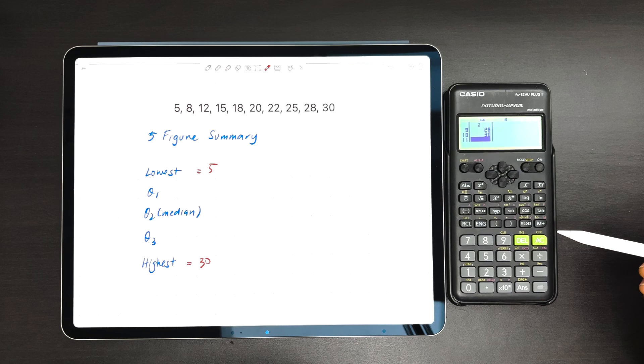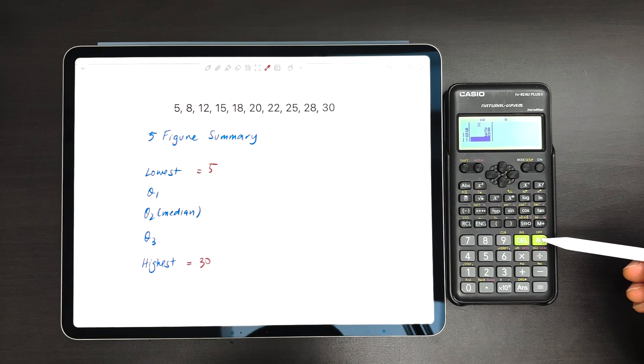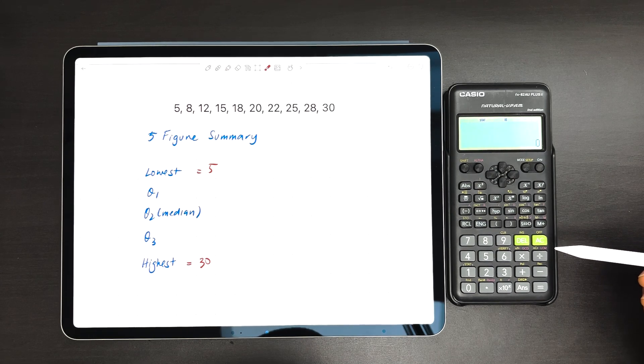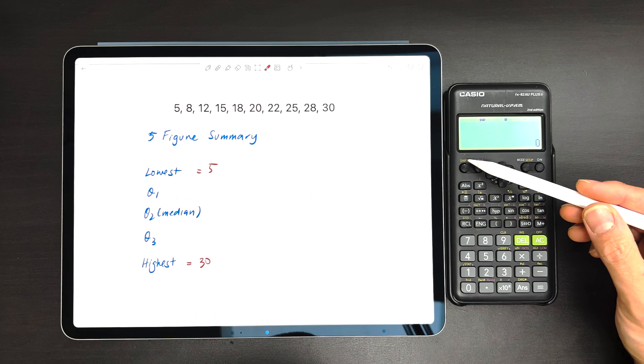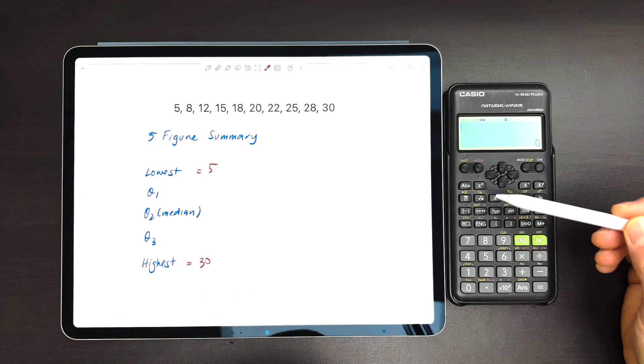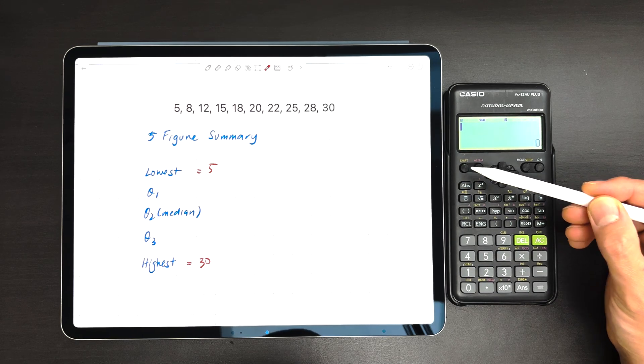Now, I know this next step is going to be a bit counterintuitive, but you're going to press AC. Don't worry, it's not going to wipe it out. We're going to press Shift 1 because that's going to get us in stat mode, as you'll see above the 1.